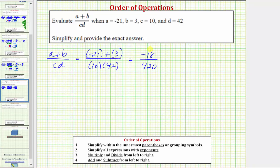Because the numerator is negative, and the denominator is positive, or because a negative divided by a positive is negative, we can write this as negative 18 over 420. Now we need to simplify the fraction by simplifying out all the common factors between 18 and 420.